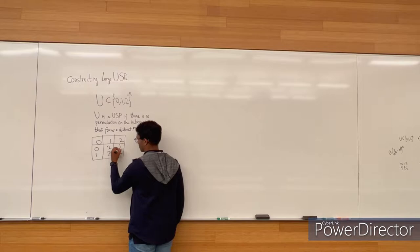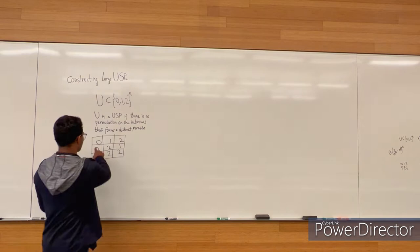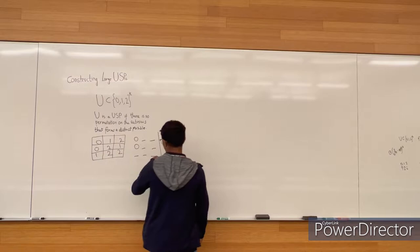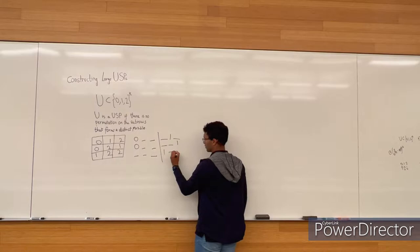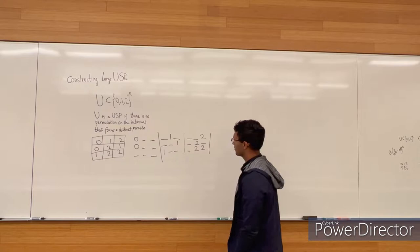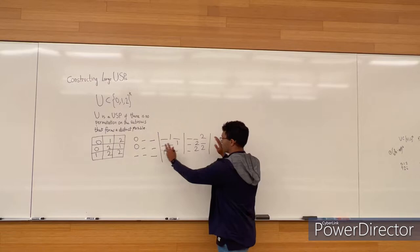By our definition, this is a USP if there is no way to permute these sub-rows to form a distinct puzzle. Let's look at the sub-rows. First, consider all the zeros: 0, 0, and nothing here. Then look at the 1s, and look at the 2s. You can see there is no way to permute any of these rows to form a distinct puzzle.